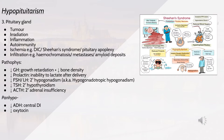The pathophysiology: decreased growth hormone leads to growth retardation and decreased bone density. Decreased prolactin leads to inability to lactate after delivery. Decreased FSH or LH leads to secondary hypogonadism. Decreased TSH leads to secondary hypothyroidism. Decreased ACTH leads to secondary adrenal insufficiency. In panhypopituitarism, a decrease in ADH causes central diabetes insipidus, and there is also a decrease in oxytocin.